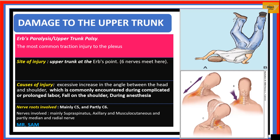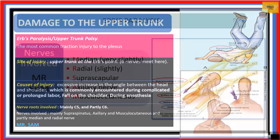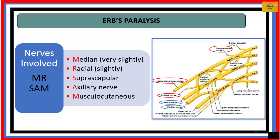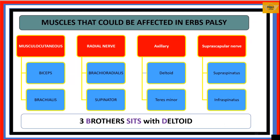When Erb's paralysis occurs, the nerve roots involved are C5 and C6. The nerves affected are the suprascapular nerve, axillary nerve, musculocutaneous nerve, and partly the median and radial nerves. A useful mnemonic for remembering the affected nerves is 'Mr. Sam.' These nerves' involvement affects the muscles they innervate and the functions those muscles carry out, eventually leading to disability or deformity.